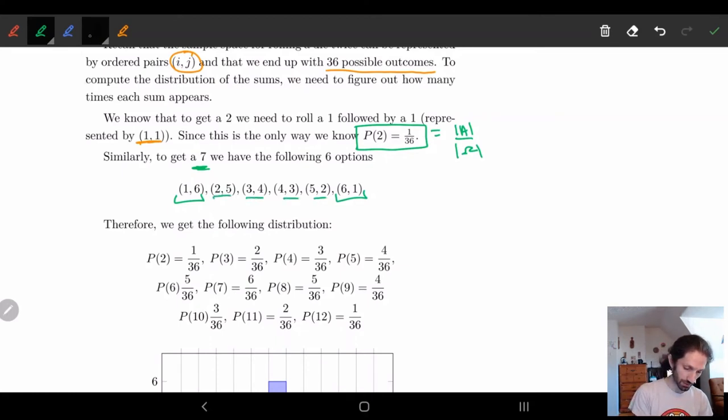So I end up having six different options. And so therefore the probability that seven shows up is six over 36. And so I can do this with every single number. So P of two we said is one over 36. And then if you want, you can verify that the P of any given number is given here. This I forgot to make into equal signs.